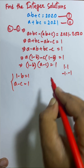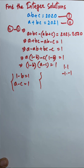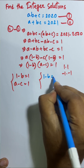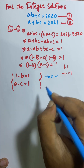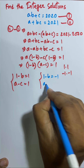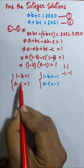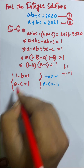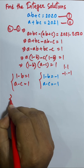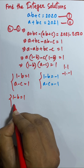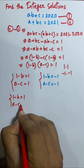So now I can say either: Case 1 — (1 minus b) equals 1 and (a minus c) equals 1, or Case 2 — (1 minus b) equals negative 1 and (a minus c) equals negative 1.